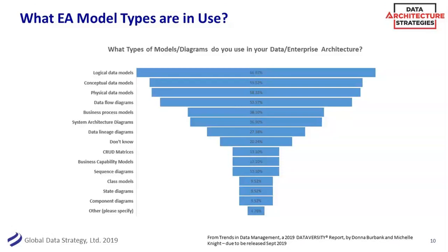You do see a very high concentration of logical and conceptual data models, which if you know me well, is very near and dear to my heart. Those are definitely the zoom out — where you're getting the business value and business meaning. What do we even mean by 'customer' or 'member' or 'product'? Those are the very high-level definitions. And at this level, they're very easily mapped to things like business processes. Physical data models are also being used — obviously necessary in any architecture — as well as things like data flow diagrams.